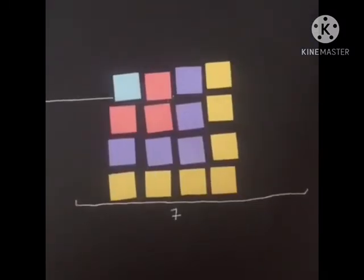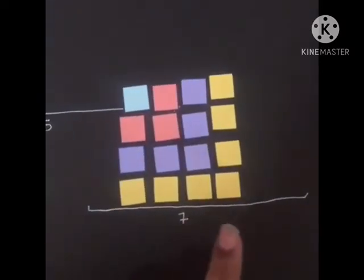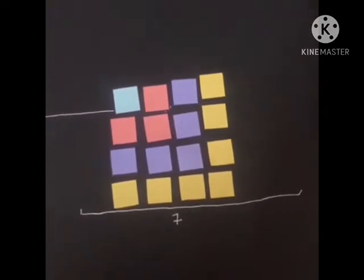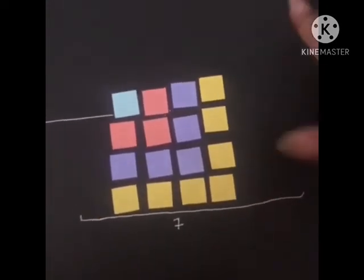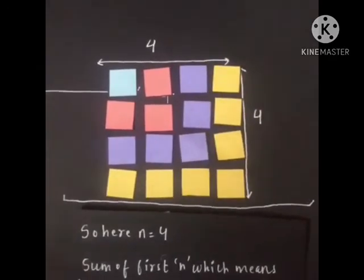So we observe that all the squares easily fit in this last one, which means that we can say sum of first n odd natural numbers is n into n, which is n squared.